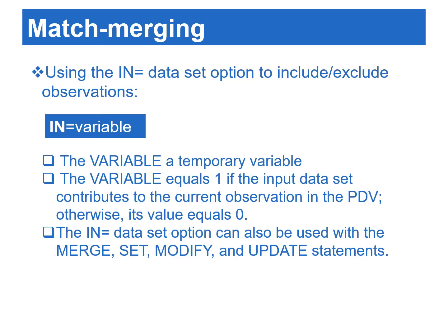By default, SAS combines all the observations from all the input data sets during a match merge. We can exclude any unmatched observations by using the in equals data set option. The variable specified in the in equals data set option is a temporary variable — it is not included in the output data set. Its value is either one or zero: the variable equals one if the input data set contributes to the current observation in the PDV, otherwise its value equals zero.